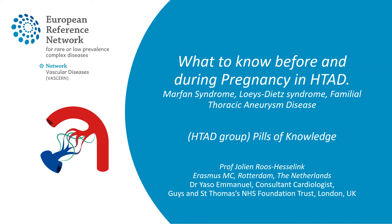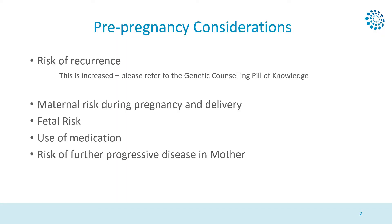Welcome to this short presentation on the issues to consider for patients with hereditary thoracic aneurysm disease who are considering pregnancy. There are five main aspects to consider. The first is the risk of recurrence, that is, the risk of the baby inheriting thoracic aneurysm disease.